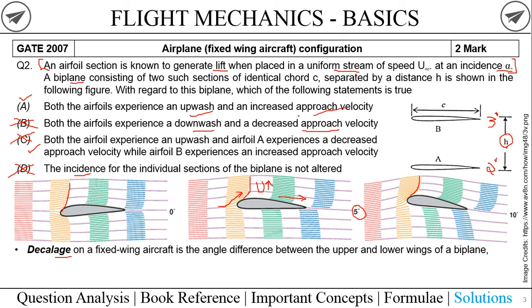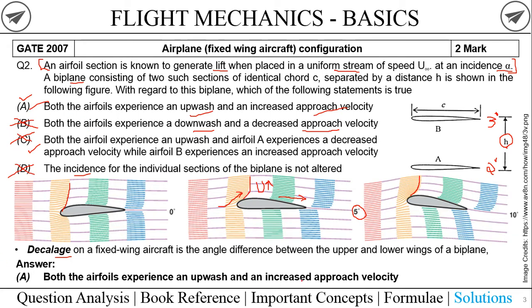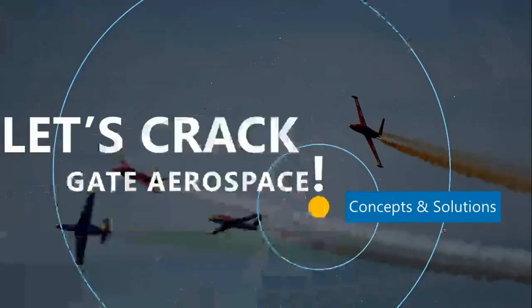We are left with option A: both airfoils experience an upwash and increased approach velocity. Checking the answer key confirms this is correct. There may be alternate approaches using aerodynamics, circulation, and so on, but we are not covering those here. If you have alternate answers or disagree, please drop a comment — it will be helpful. That's it for this session. Thank you, let's crack GATE Aerospace Engineering!